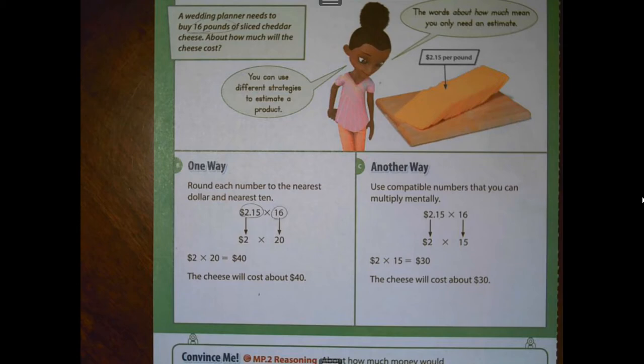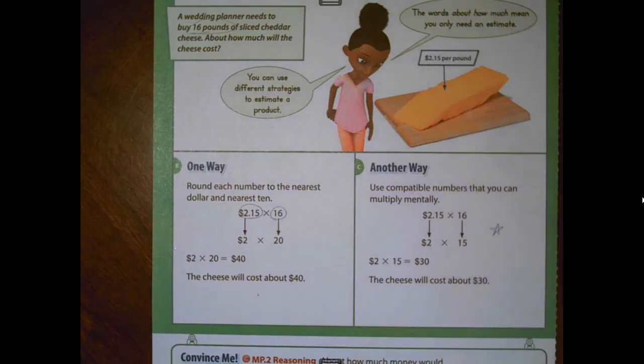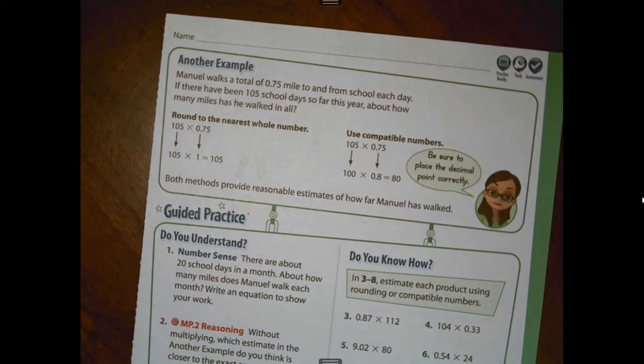Now thinking about which one will be closest to the actual value, remember the one closest to the actual product is going to be the method in which your factors are as close to the original factors as possible. So in this case, your compatible numbers are going to give you a closer estimate. All right, boys and girls, let's just go straight to page 173. And let's look at another example at the top of the page.